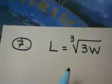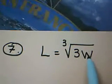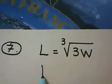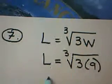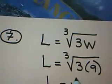Well, if a bird weighs 9 pounds, you're told to put 9 in for W. So L is equal to the cube root of 3 times 9. That becomes the cube root of 27.